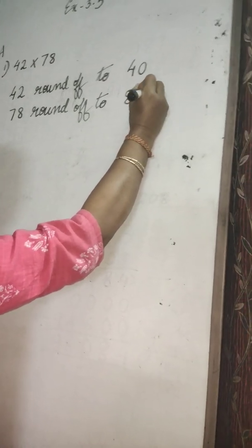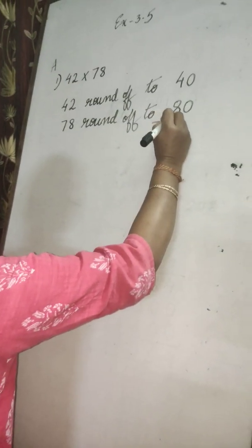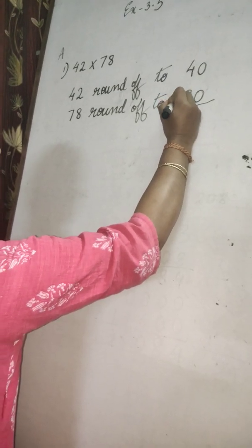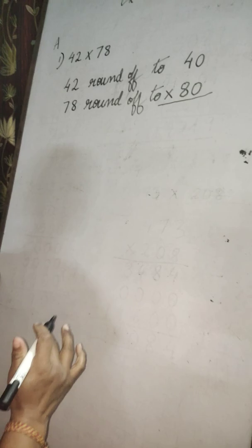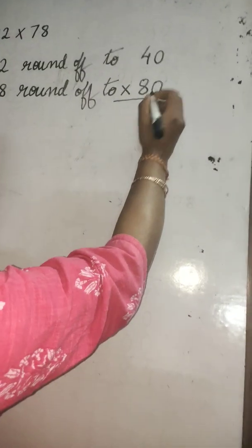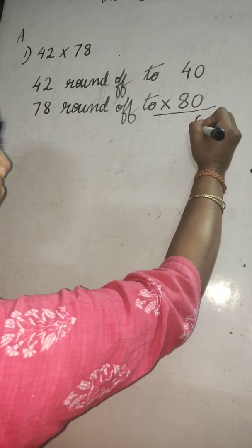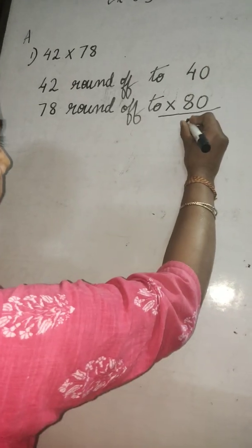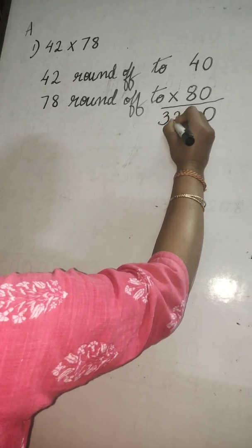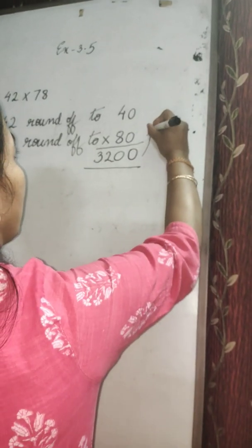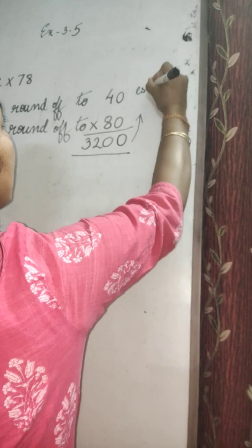78 rounds off to 80. Then you have to find out the product of these two estimated numbers. If you multiply with 0, it will always be 0. How many zeros will you get? 1, 2. Now multiply 8 times 4 is 32. So 3200 is the estimated product.